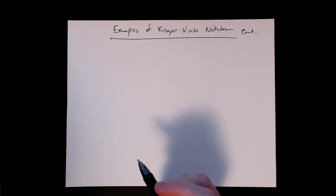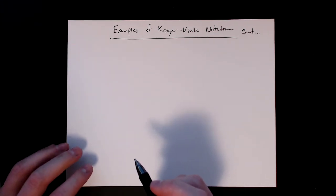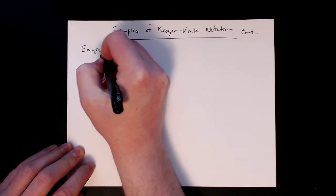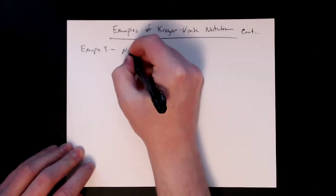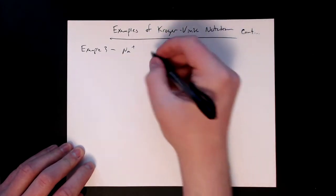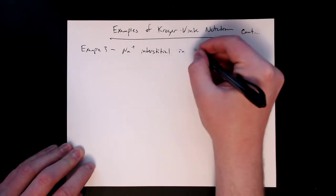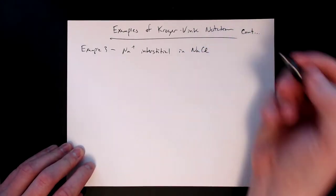All right, let's continue looking over some different examples of Kröger-Vink notation, and for example three, let's look at a sodium interstitial now in NaCl.